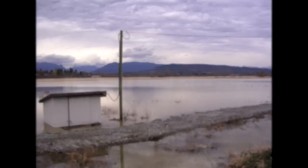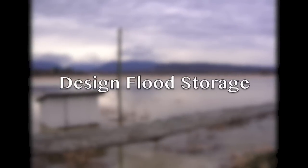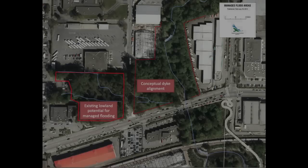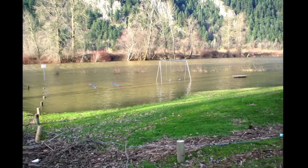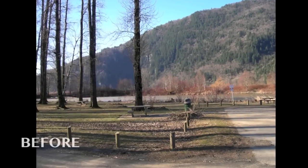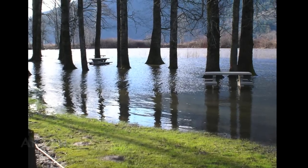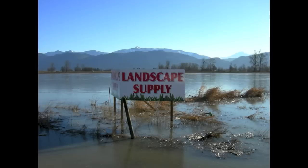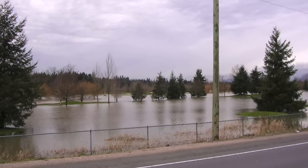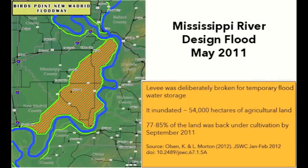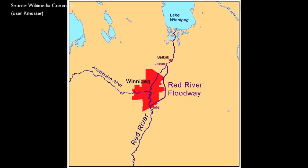An innovative approach to flood protection is called design flood storage. This is where we designate topographic depressions within the watershed as a place for temporary water storage during very large storms. Areas with minimal building infrastructure such as playgrounds, parks, golf courses, and agricultural areas can effectively serve to temporarily store water that can be released after the peak storm has passed. Recently, design flood storage has worked effectively in a number of storm events in the Mississippi River Basin in the U.S. and in the Red River Basin in Manitoba.